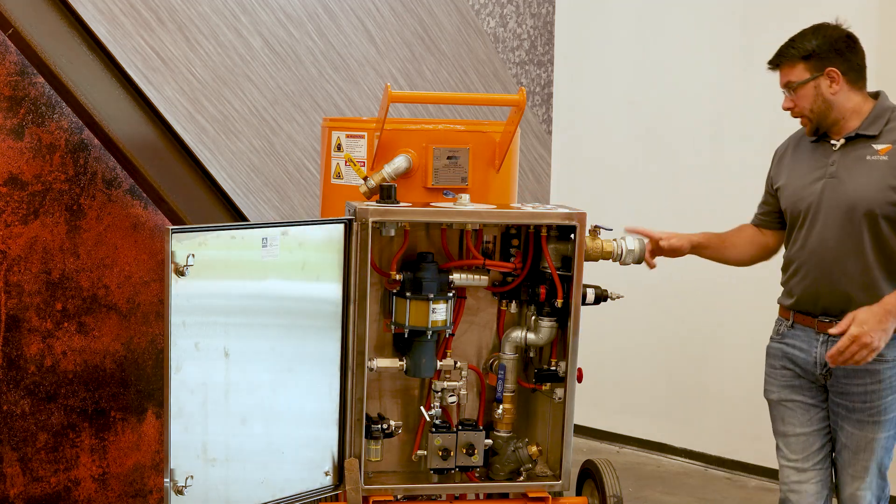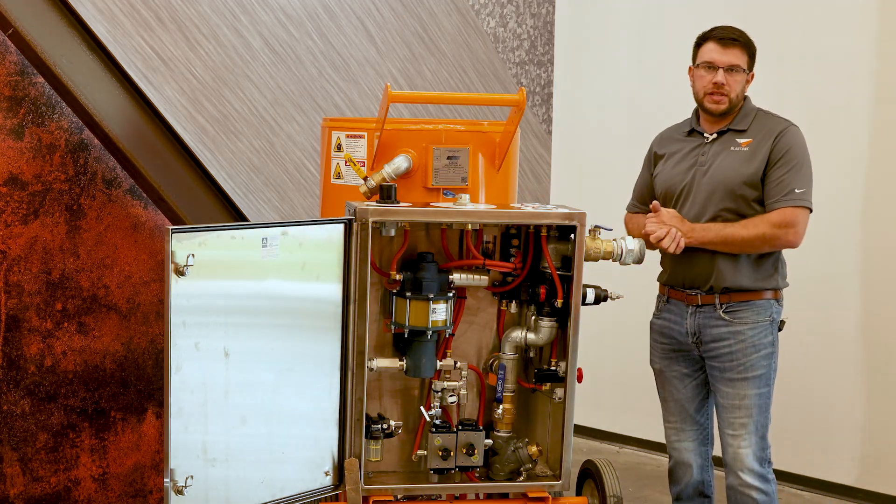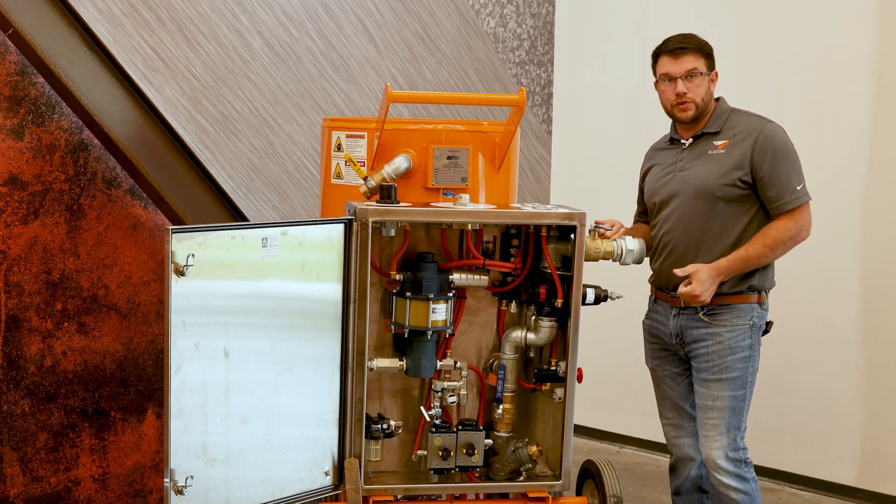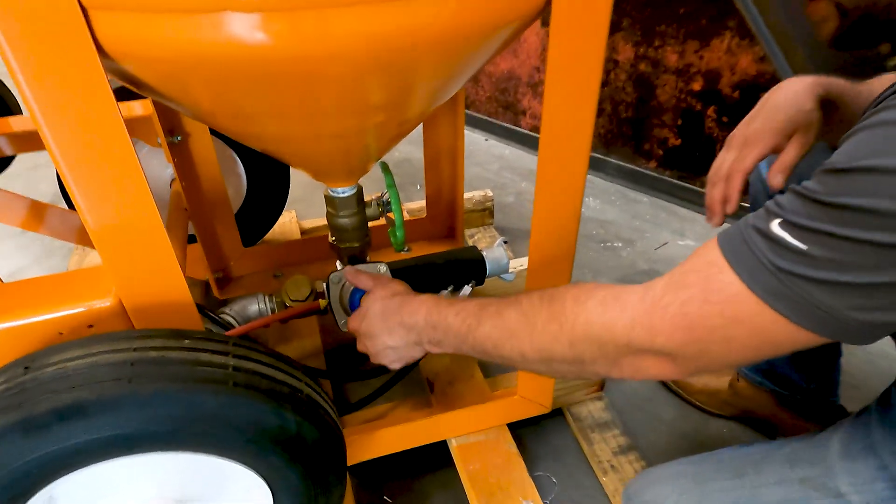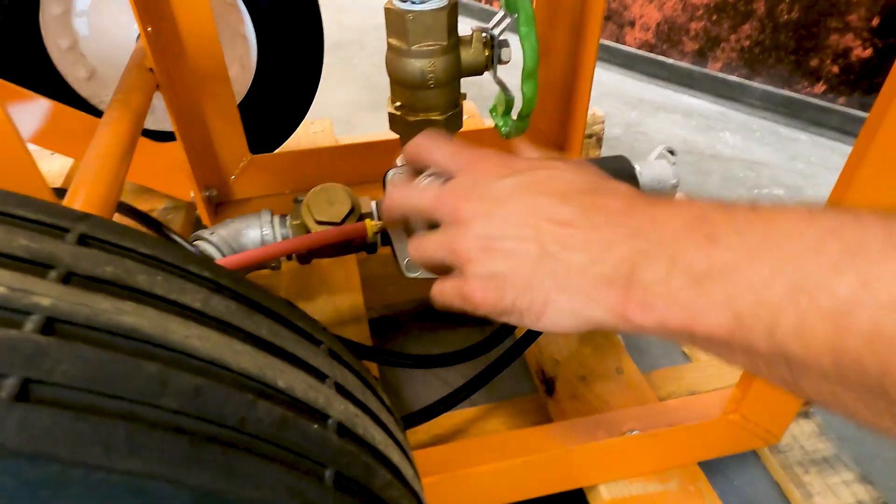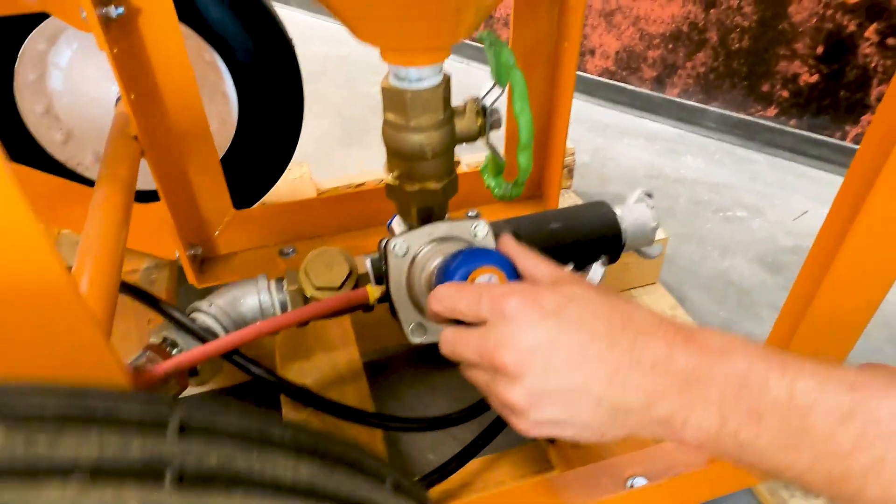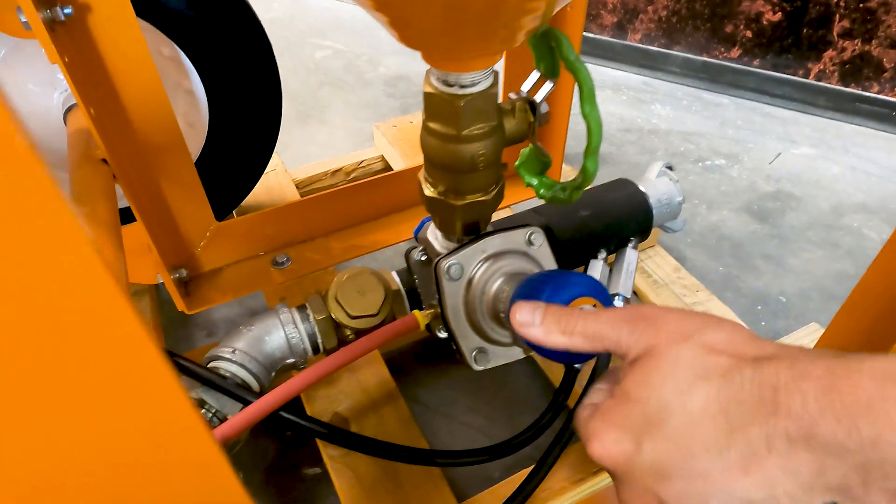Another thing you're going to want to look at is the metering valve. Just like every other sandblaster out there, there is some sort of metering valve. And on this particular unit, we use the tear valve. Typically with a garnet, you're going to be three and a half, four turns out, four and a quarter turns out from all the way in.